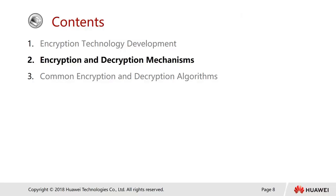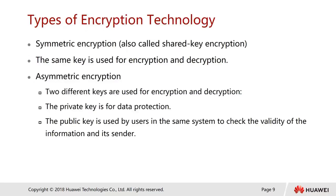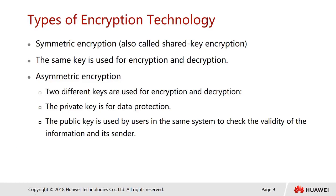Let's look at the mechanism of encryption and decryption. There are two types of encryption technologies. The first method is called symmetric encryption, also known as shared key encryption, which means both parties share the same key for encryption and decryption. The second type is called asymmetric encryption.